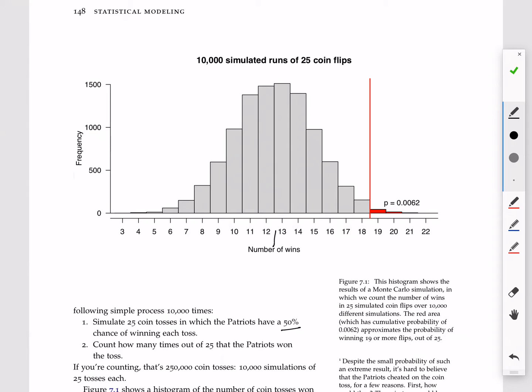That's the average of 25 coin tosses with a 50% chance of winning. Sometimes they win fewer than 12 or 13. Sometimes they win more. And yes, sometimes they even do win as many as 19 or even 20 or 21 times out of 25.